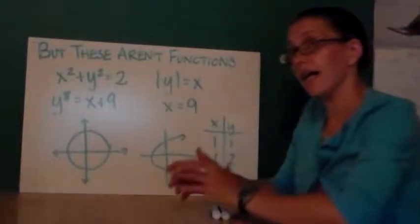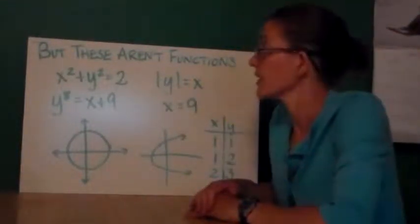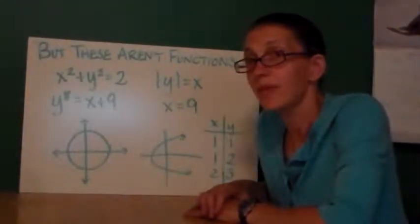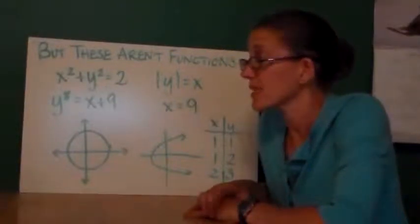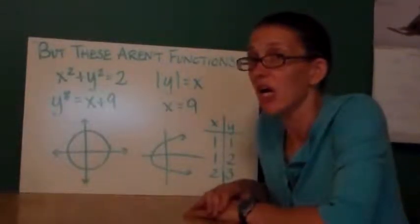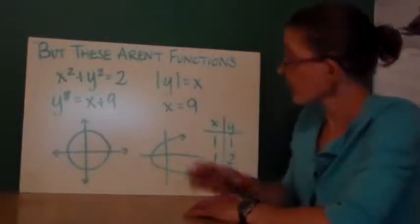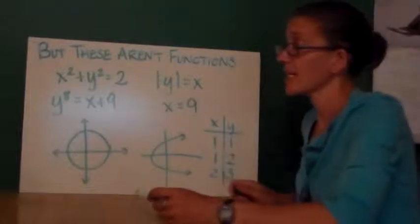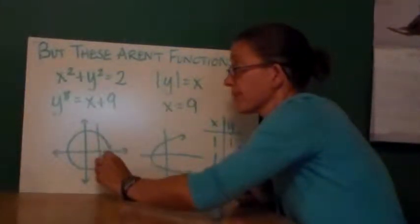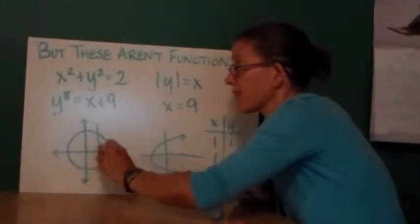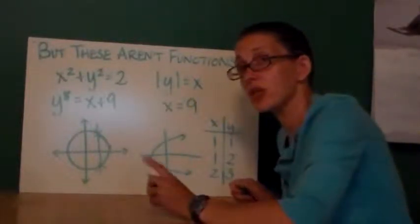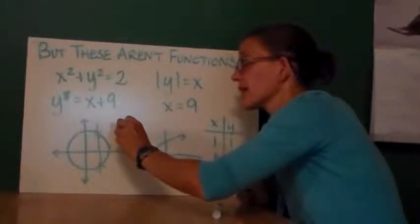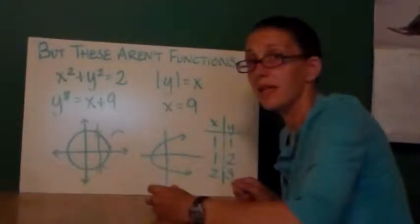On this slide, these are not functions. You'll notice in both of these, y has been raised to an even power. This is the hallmark of something, an equation that is not a function. On these graphs, they both fail something called the vertical line test. You can see if I draw a vertical line through this graph of the circle, it intersects the circle. The single vertical line intersects the circle in two places. That makes this not a function.